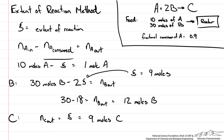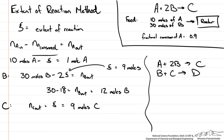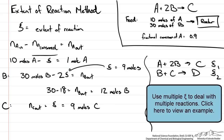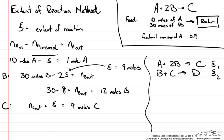The extent of reaction method is useful for multiple reactions. For example, with A plus 2B goes to C and B plus C goes to D, we would define an extent of reaction for each equation and write our balances using both extents. Hopefully this gives you a clear idea of the differences between the molecular species, atomic species, and extent of reaction methods.